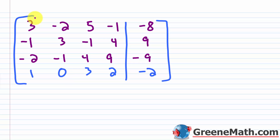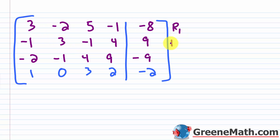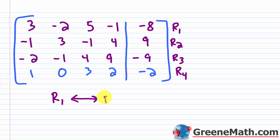The very first thing I want to do is get a 1 in the top-left position and then get zeros below it. Every time I move right to a new column, I want to get my 1 first, then my zeros. I could multiply row 1 by one-third, but there's an easier solution: for the elementary row operations, I can swap two rows. So I'll swap row 1 with row 4, because I already have a 1 there.